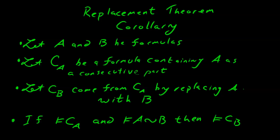In this case, if CA is a valid formula, and A is equivalent to B is a valid formula, then CB is also a valid formula.